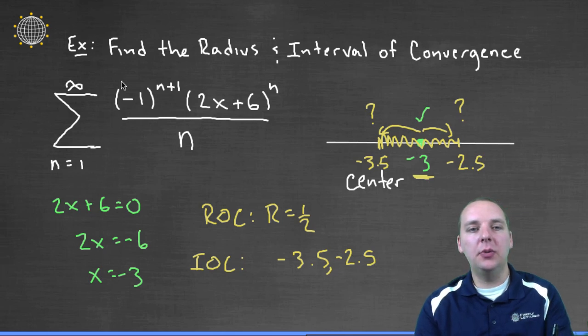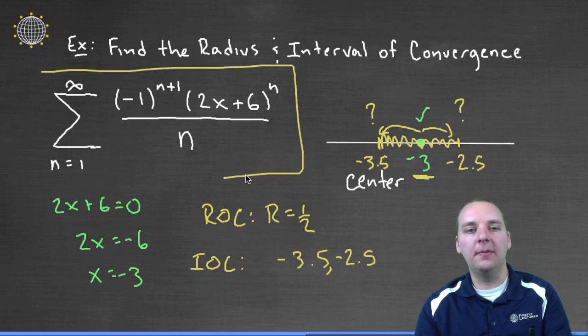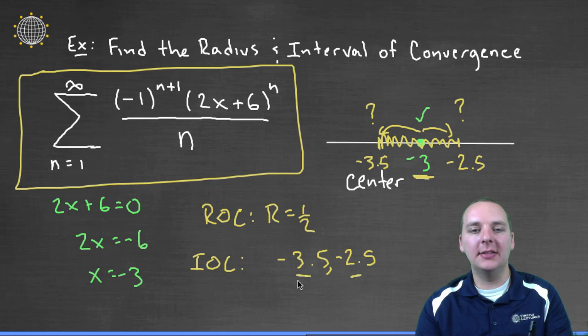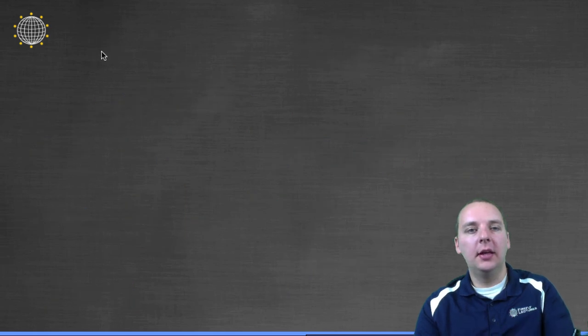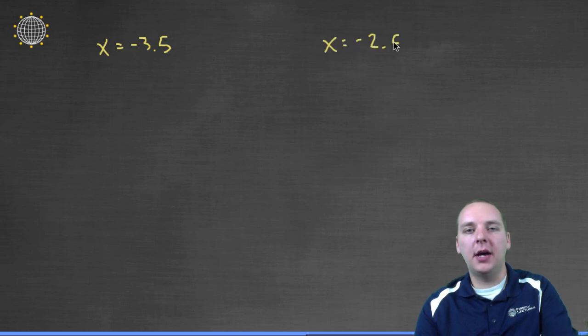So let's do that. What we do is we take this series right here, and we literally plug in these x's. So negative 3.5 and negative 2.5. So let's take x equals negative 3.5, we'll do that on this side. And x equals negative 2.5, we'll plug that in on this side.